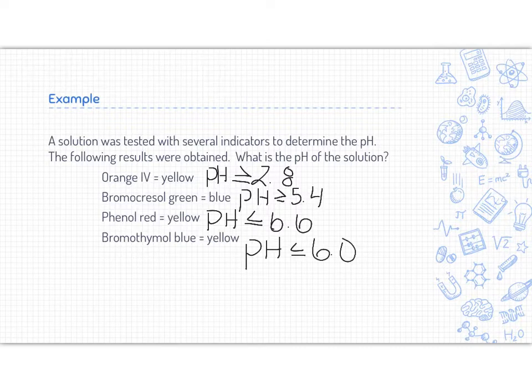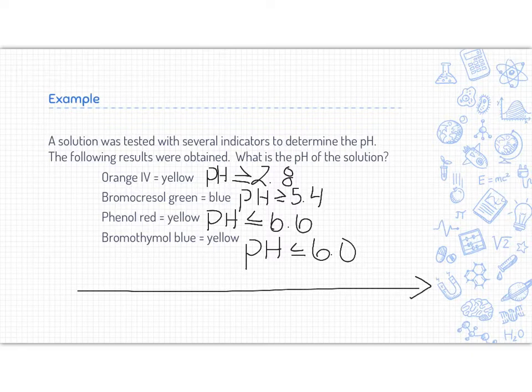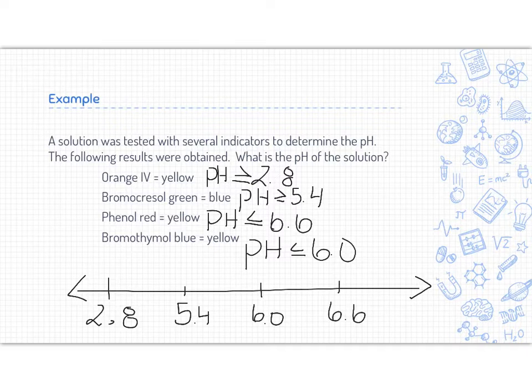Now, some of you can look at all of these numbers and know exactly what the pH is, but what I'm going to do is I'm going to put this on a bit of a number line. So I waited to make my number line until I knew which numbers on our pH scale was important. So 2.8 showed up, 5.4, I'm not drawing this to scale at all, 6.0 and 6.6 were important points. So what I'm going to do is use a different color for each indicator. So orange for being yellow, the pH had to be greater than 2.8. So 2.8 and onwards is what that could be.